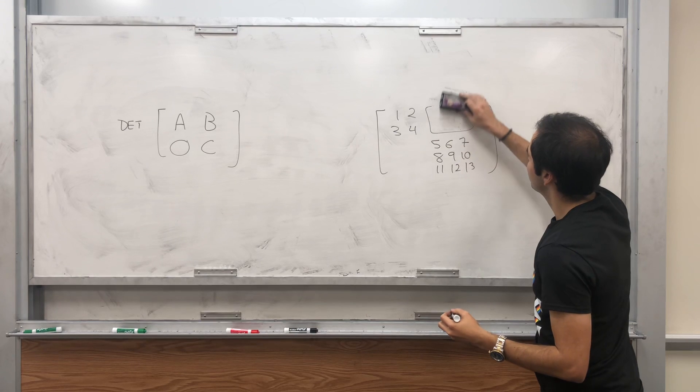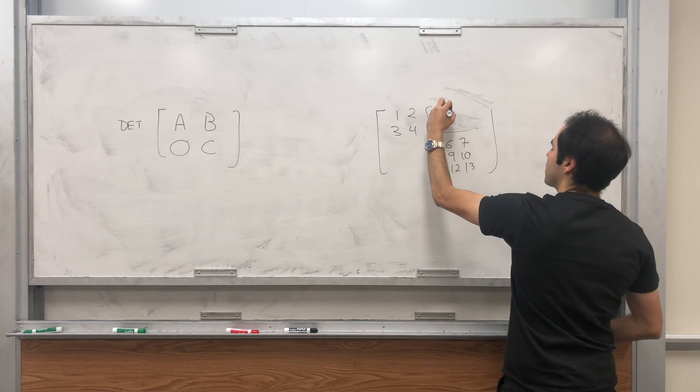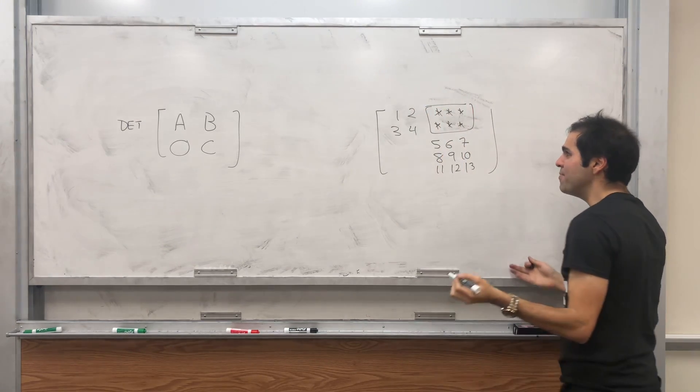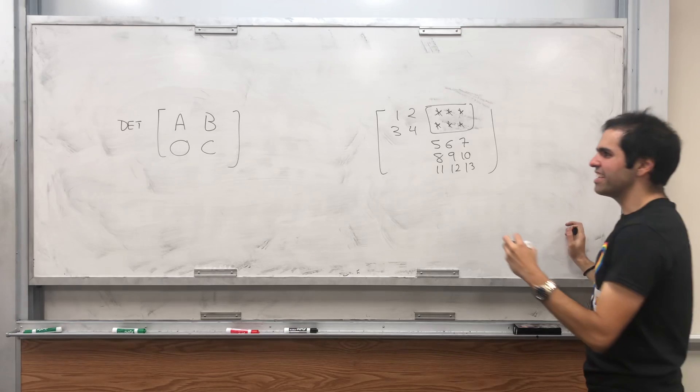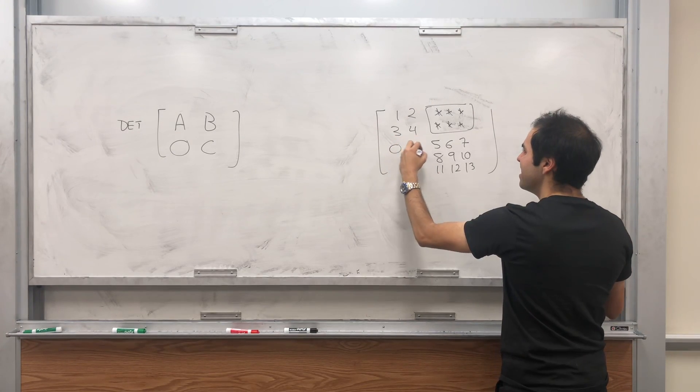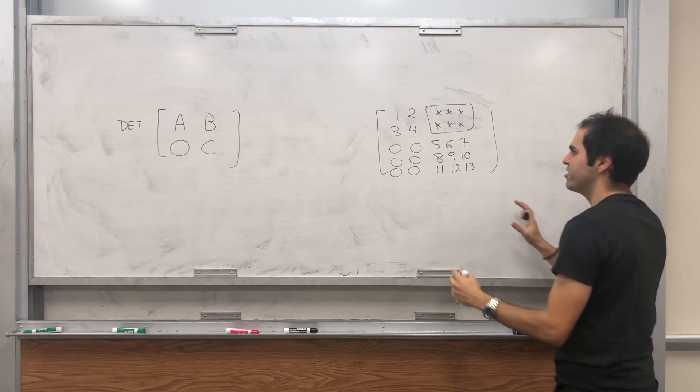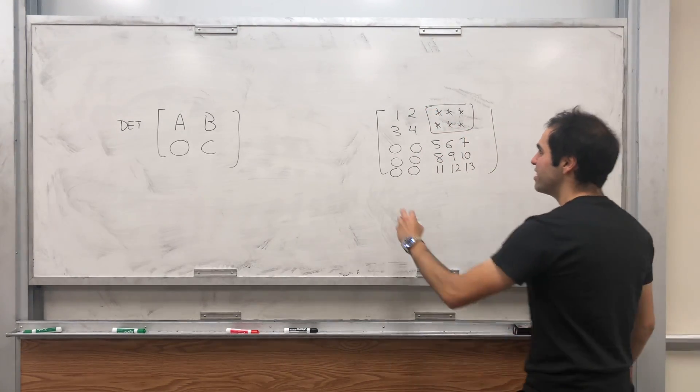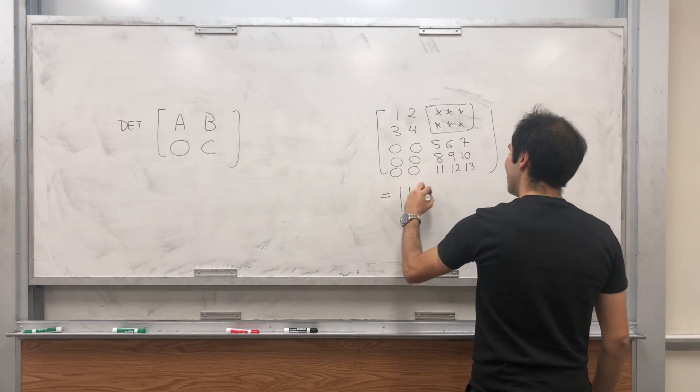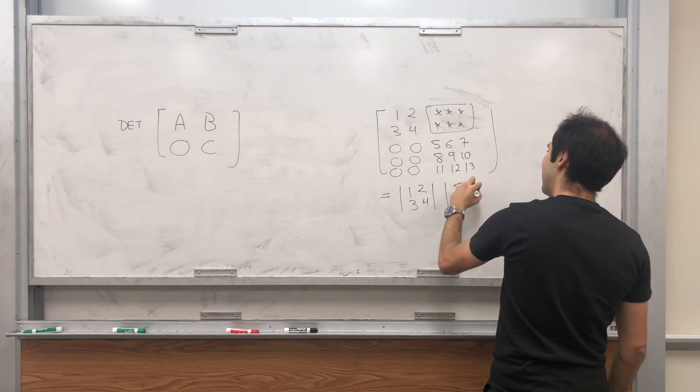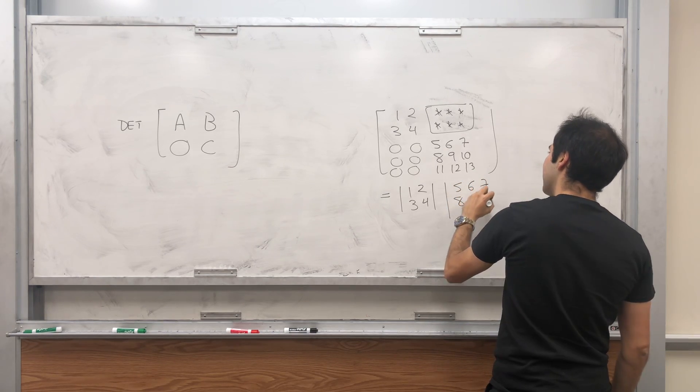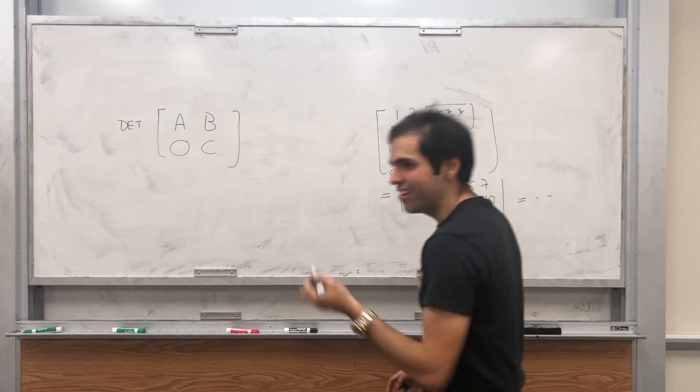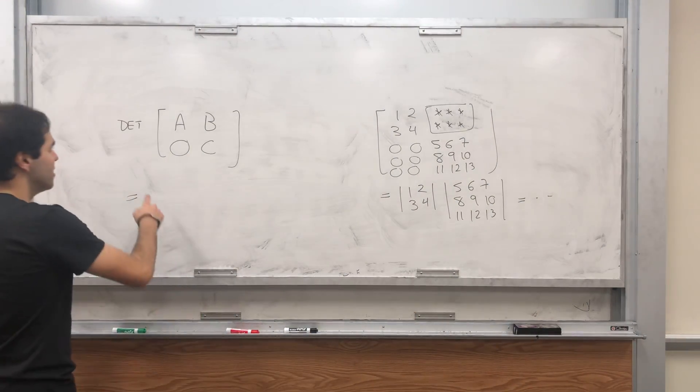So here would be size 2 times 3 or something, just to make this work. And I'm claiming it turns out it's very easy to calculate the determinant of those kind of matrices. You just take the determinant of this matrix times the determinant of this matrix: 1 2 3 4 times the determinant of 5 6 7 8 9 10 11 12 13, which you can explicitly calculate.